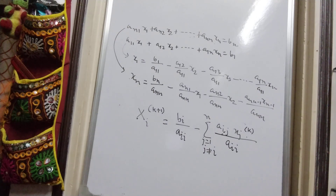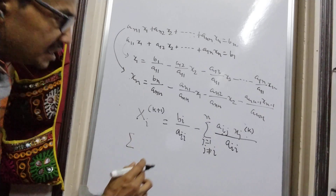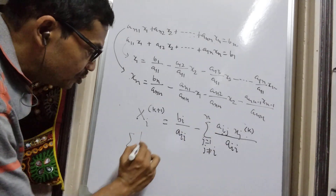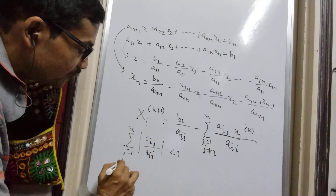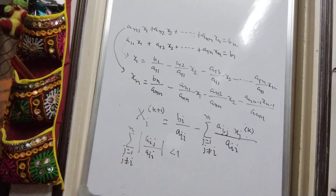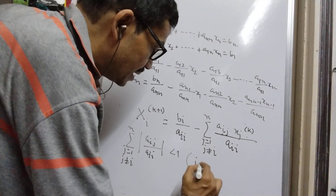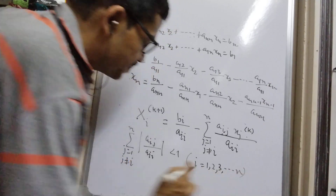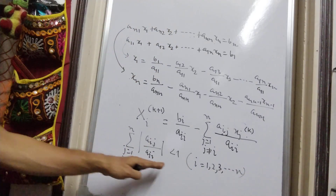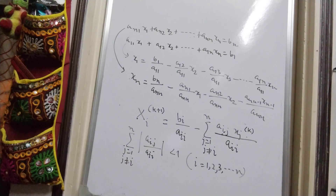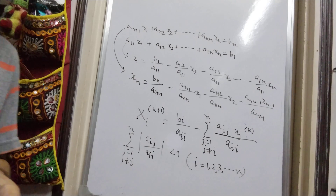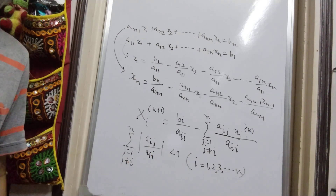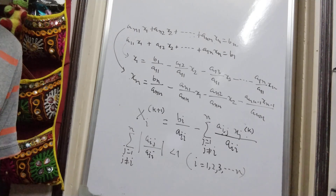This iterative scheme converges only if the summation |aij/aii| < 1, where j runs from 1 to n with j ≠ i. If at least one or two values of i satisfy this condition, the system converges, but it is preferable that all these values are less than 1, and we represent the equations accordingly. That is essentially the scheme for the Gauss-Seidel or Gauss-Jacobi iterative method.